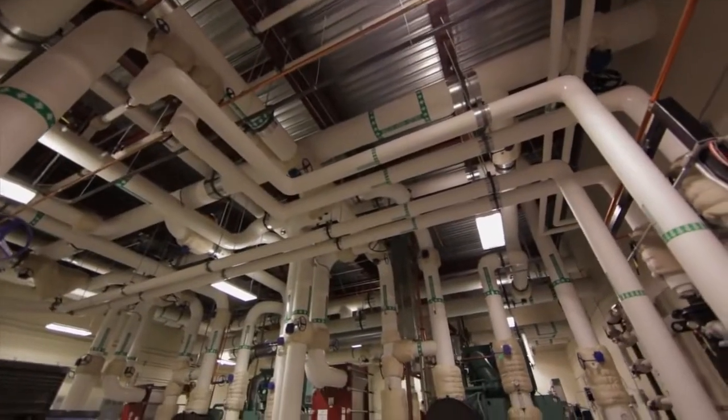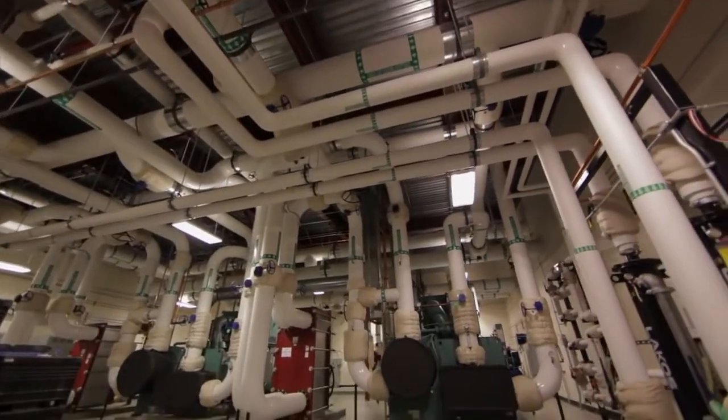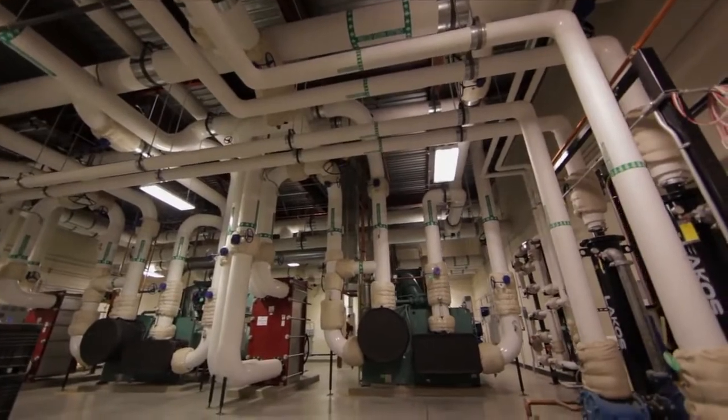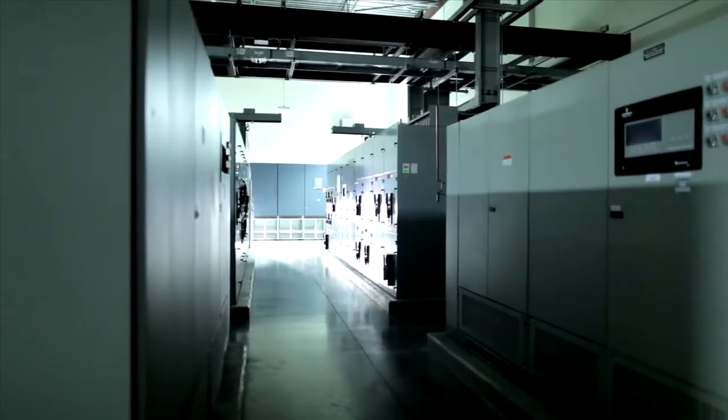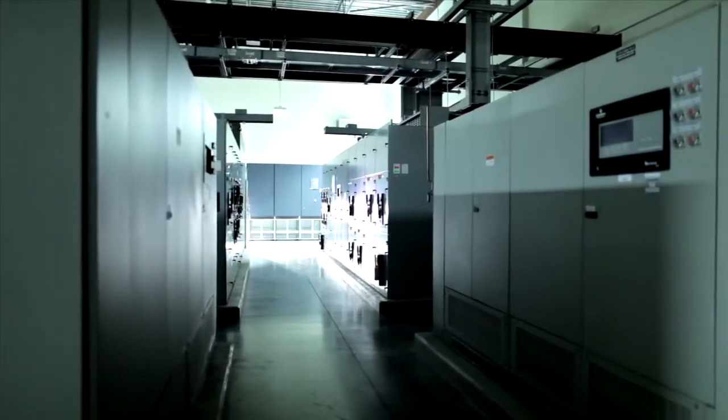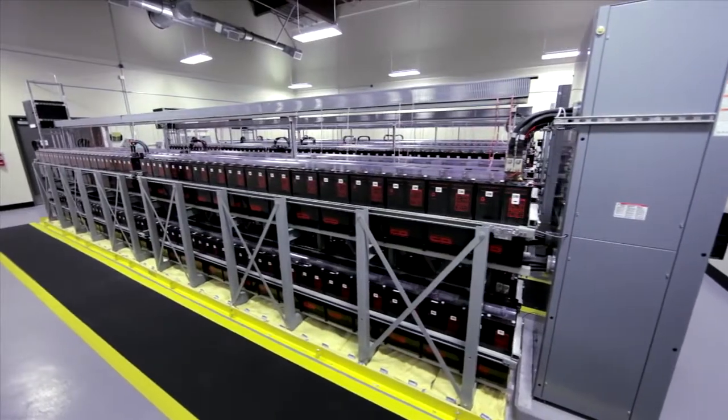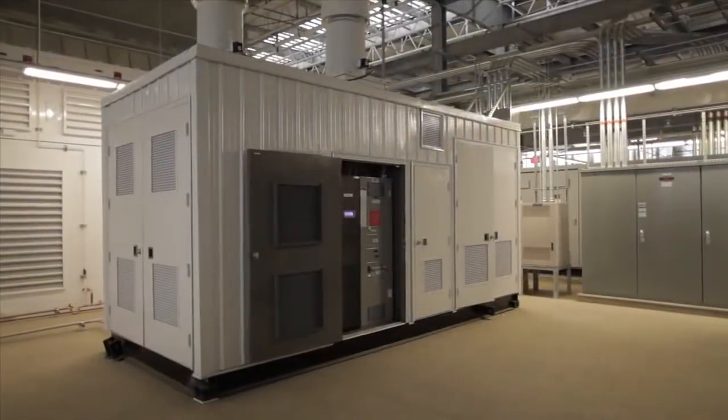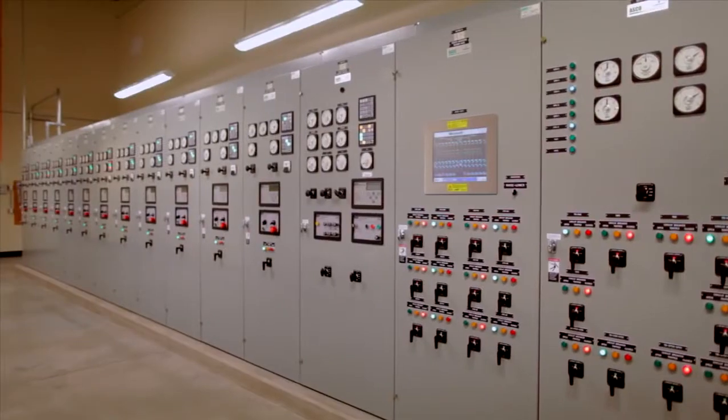Chillers and air handling equipment ensure precise control over environmental conditions. Uninterruptible power supplies, or UPS systems, and vast banks of batteries help ensure power remains continuous in the event of a short-term disruption.